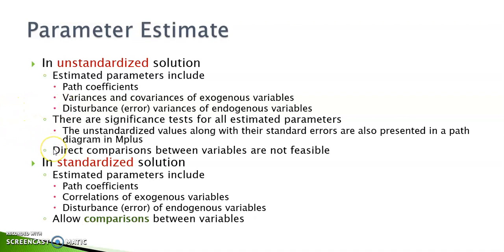However, direct comparison between variables and between relationships are not feasible because they are scale-dependent. And when variables have different scales, we cannot compare the strengths of the relationships or the amount of variance explained in the variables.